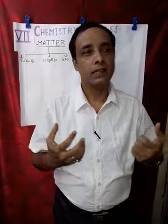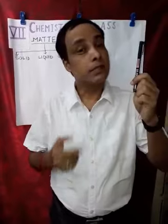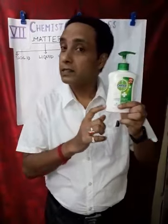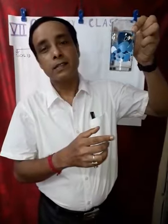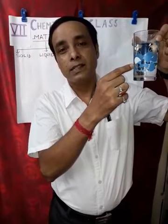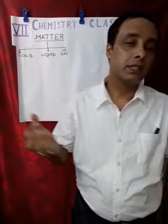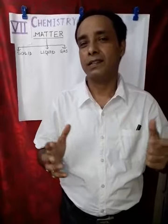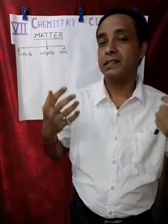So many things are there in and around you which are made up of matter. Do you think, what is this? This is a pen. Is this a matter? And what about this — a glass having water inside it. Is it a matter? The answer to all these questions is yes, you are correct, it is matter. All these are matter. Why? Because they occupy space and have a certain mass.